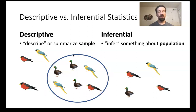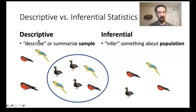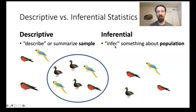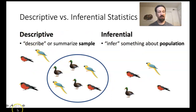Now that we know the difference between a sample—what's in the circle—compared to the population—everything on the screen—we can define these terms. Descriptive statistics are measures that only apply to the sample. In contrast, inferential statistics are mathematical values that we use to infer something about the entire population. If we're inferring, it's inferential and applies to the whole population; if we're just describing our sample, that is a descriptive statistic.